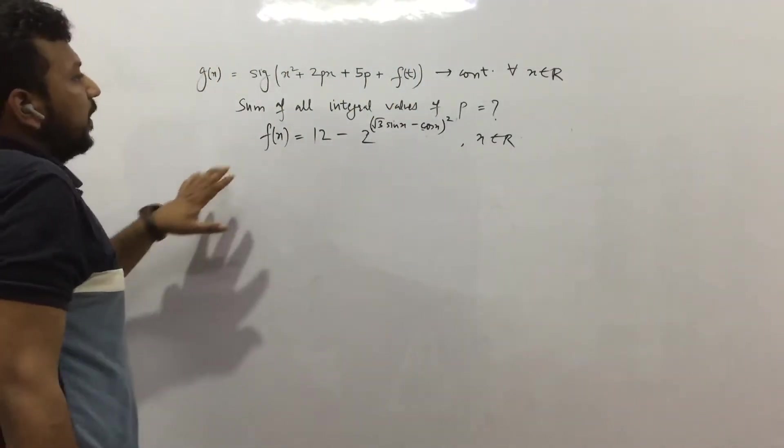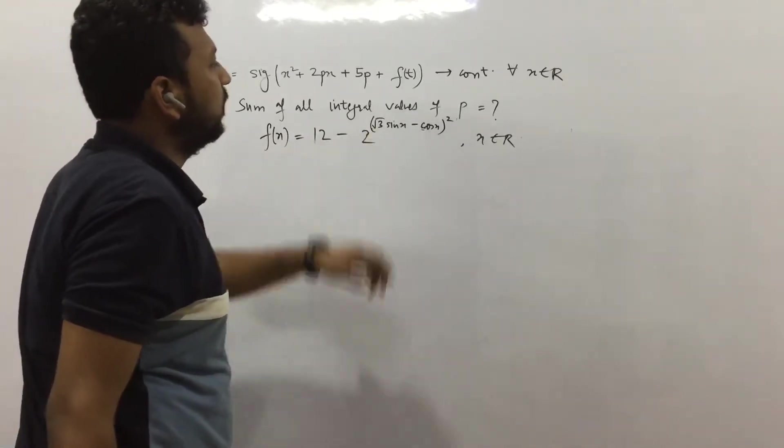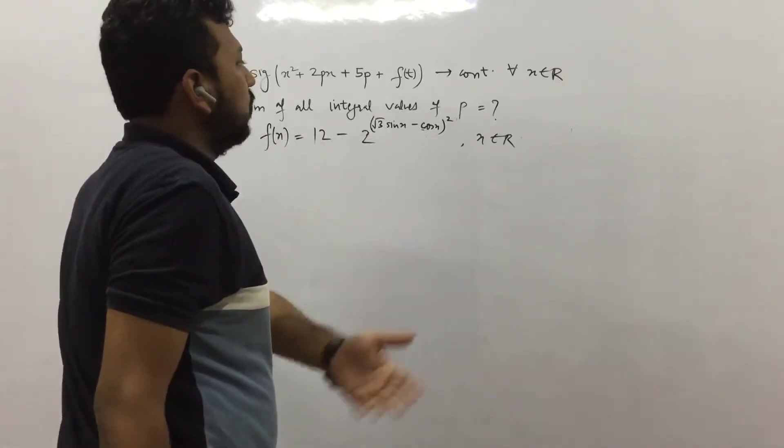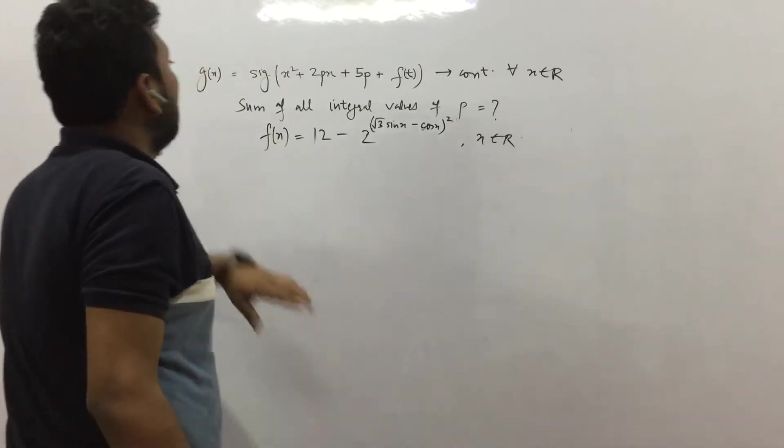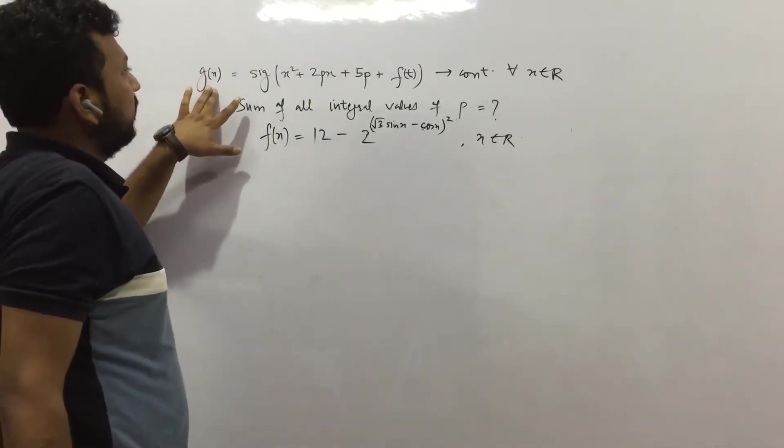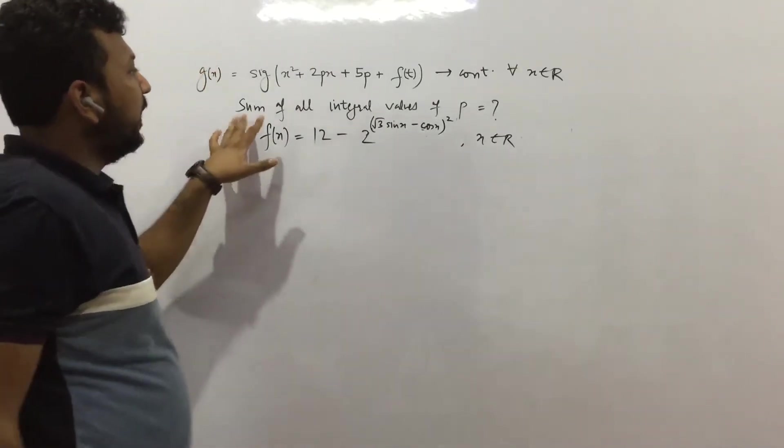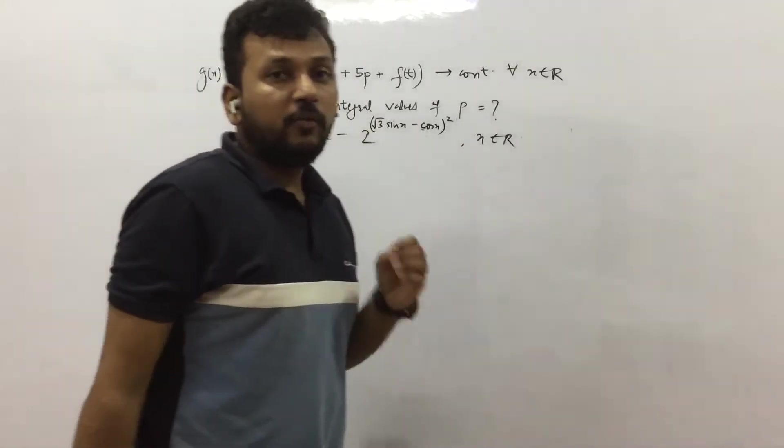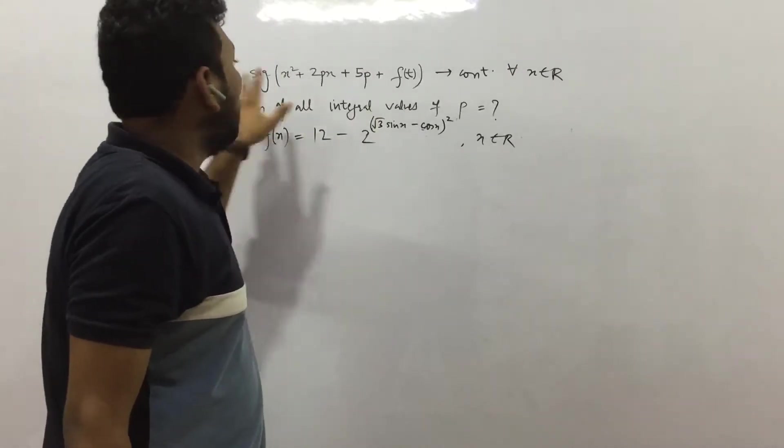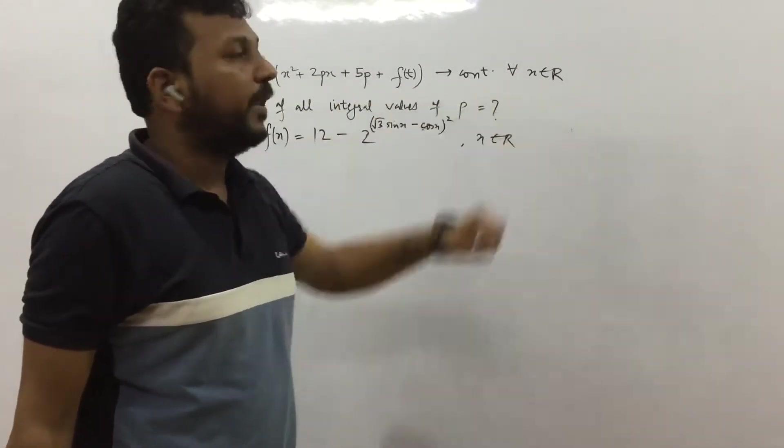The question is you are given f(x) = 12 - 2p^(√3 sin x - 4x²) for x ∈ R. You are given g(x) which is signum of this complete quantity. So you need to find sum of all integral values of p for which the above g(x) is continuous for all x ∈ R.